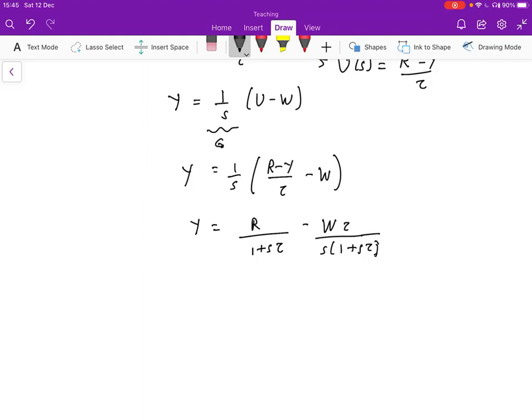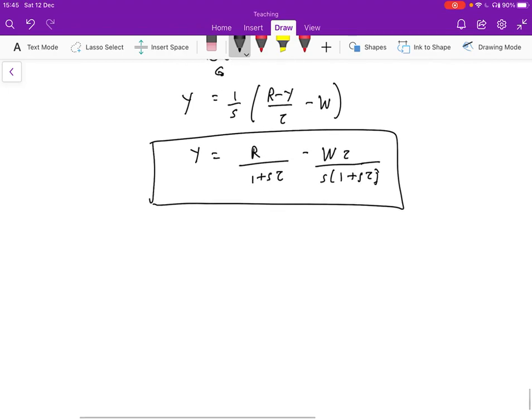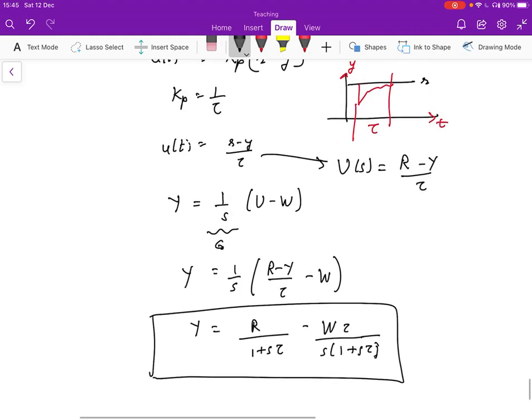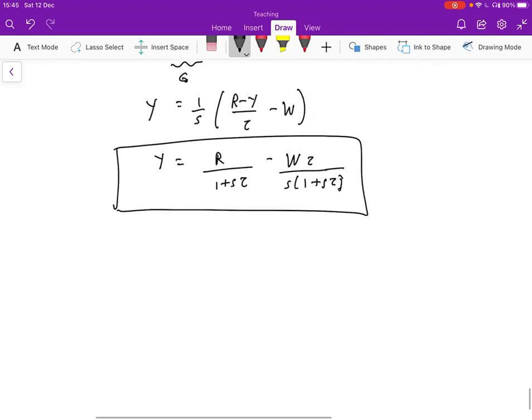So that is the form for Y. That is the output, what the output is going to look like. So let's see what this means in the time domain. So let's say that we want to keep five packets in the buffers. So we're going to keep R of S is going to be five over S as we showed over there. And so we are going to assume that the disturbance equals zero.